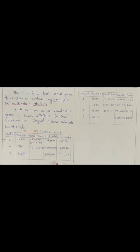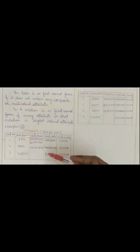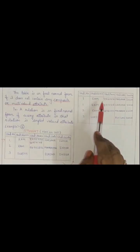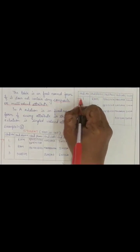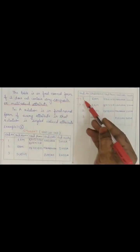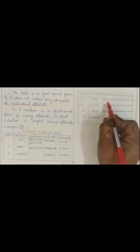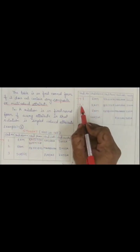Now we are going to convert this table into 1NF. How are we going to convert this? Just look at this example. We are converting the same table into 1NF. What we have done here is we have split that tuple value into two tuples. You can see: 1, RAM — the first phone number is written here with Haryana and India.